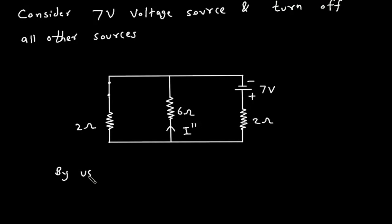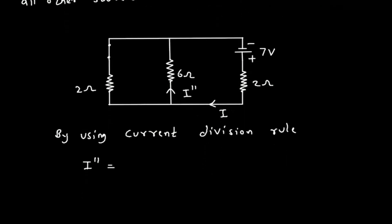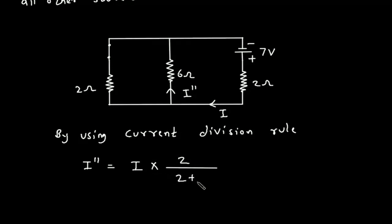Using the current division rule, I double prime is equal to the total current I multiplied by the parallel branch resistance. The parallel resistance to this 6 ohm is 2 ohm, so it is 2 divided by 2 plus 6.